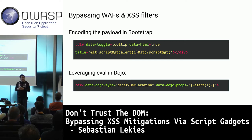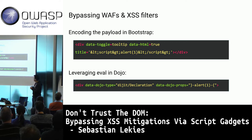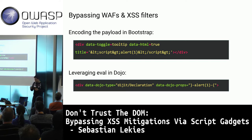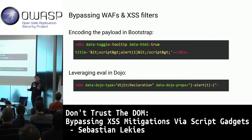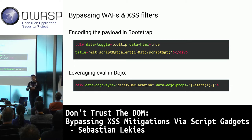Here's another example from the Dojo library — a declaration for variables or configuration values. Interestingly, all those properties or attributes are thrown into eval with some surrounding code. You can break out of the current context, type alert(1), and get an alert. It's very simple.